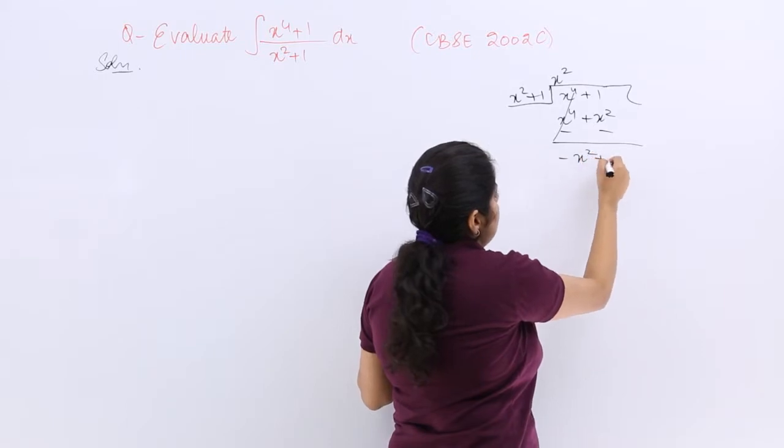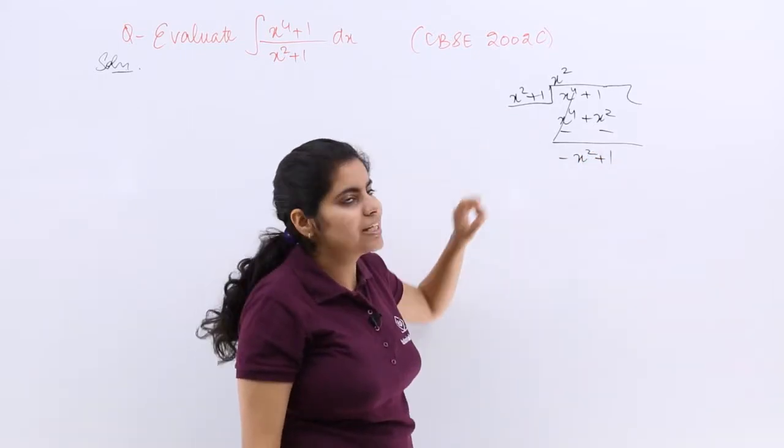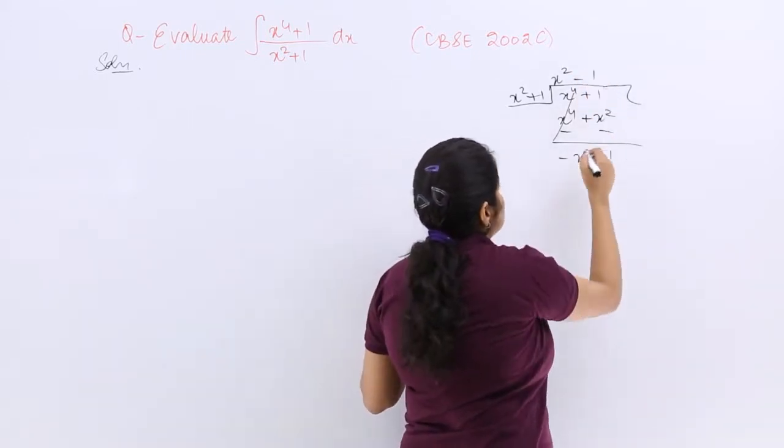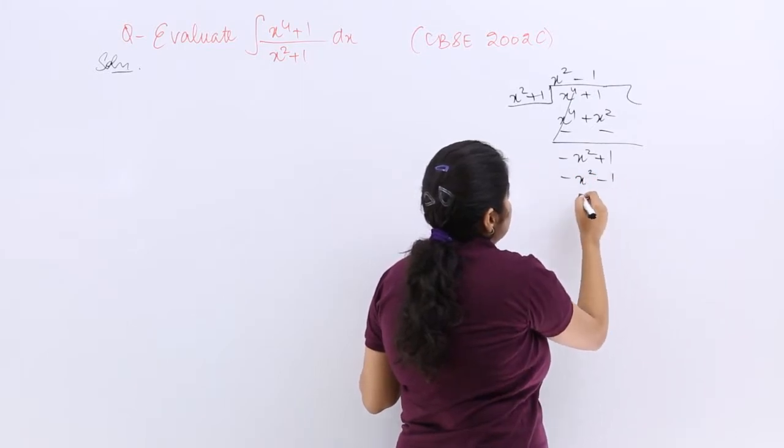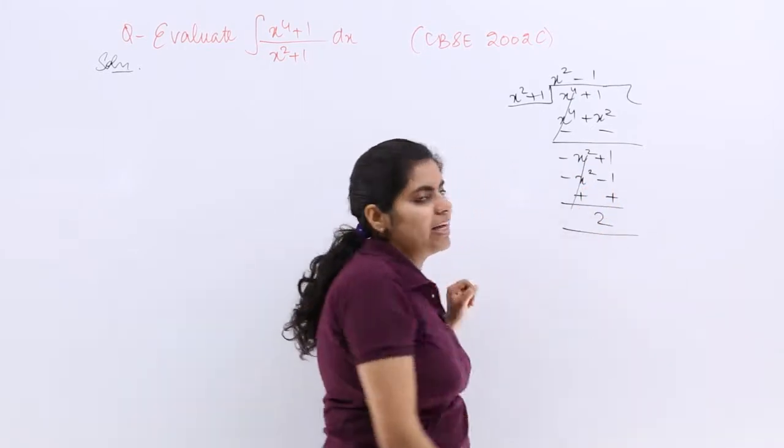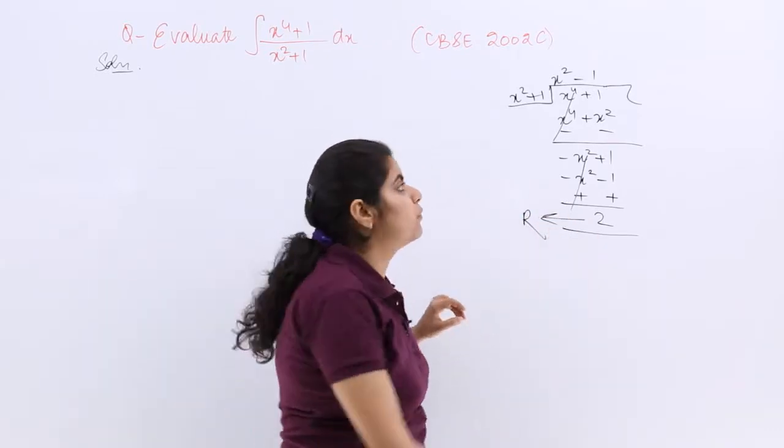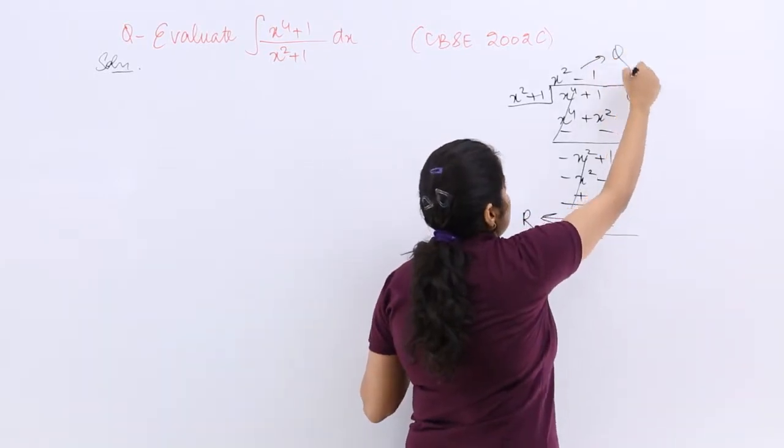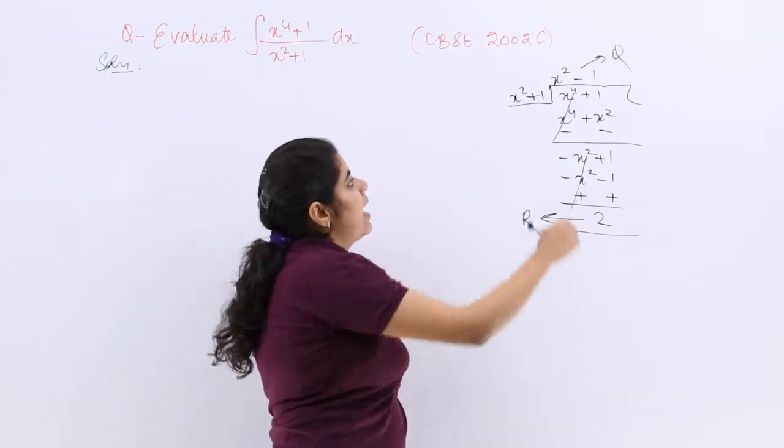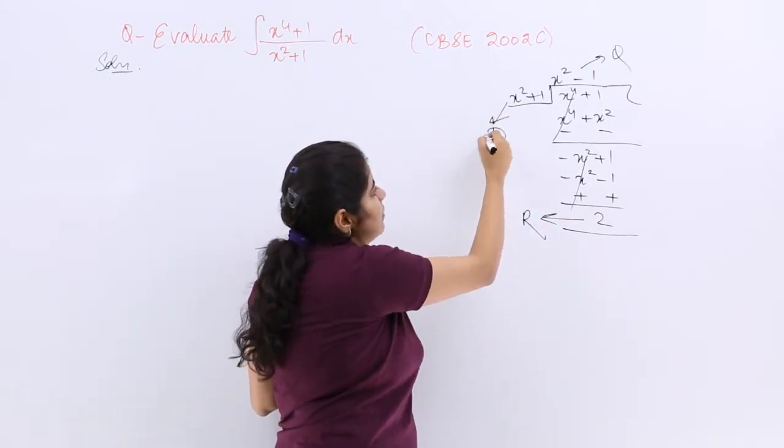I have minus x squared plus 1 this time. But here it is plus x squared multiply by minus 1. So minus x squared minus 1. So the remainder is left as 2. So see this is your remainder. And what is your quotient? Quotient is your x squared minus 1. And this I can write it as my divisor.